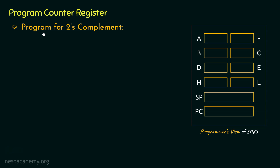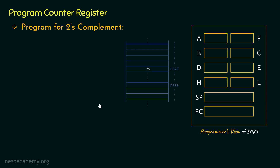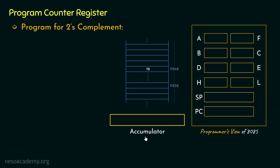We are going to build the program for 2's complement. Say within the memory at location F840, we have stored the data 78. In order to perform any operation, we will have to bring that data inside the accumulator, which is an 8-bit register. So 78 will be converted into binary: 8 in binary is 1000 and 7 is 0111. Once we have the data inside the accumulator, we complement it. 1000 becomes 0111, and 0111 becomes 1000. This is the 1's complement of the data 78.